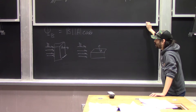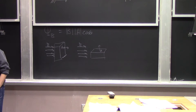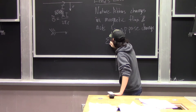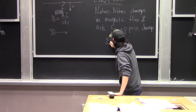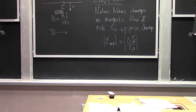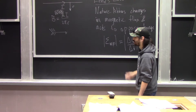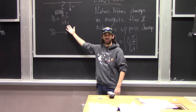Faraday's Law says that the induced EMF is equal to the change in magnetic flux divided by the change in time, treating these as magnitudes. We'll unpack this more in calculations, but I wanted to lay it out now. We're going to start with conceptual questions on Lenz's Law and Faraday's Law.